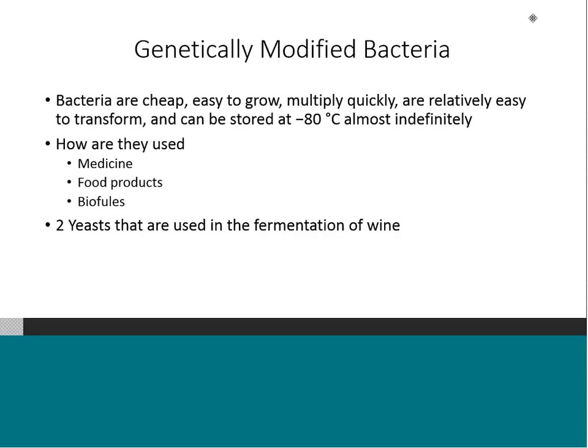Bacteria are one of the most common organisms used for genetic modification. They're cheap, easy to grow, multiply quickly, easy to transform, and can be stored. They're used heavily in the medical industry — some of the first genetically modified organisms were bacteria to help make medicine, particularly things like insulin, allowing cheap production and making medications available. A lot of food products are also made through bacteria, including enzymes, proteins, and additives that help with preserving food or making juices less cloudy. They're also heavily used now in biofuels.